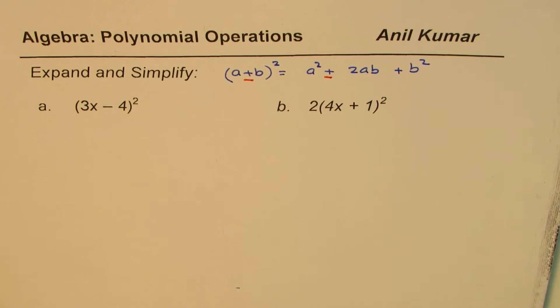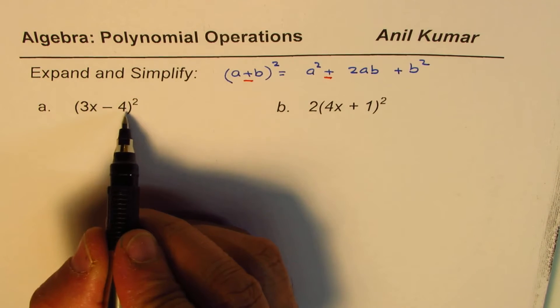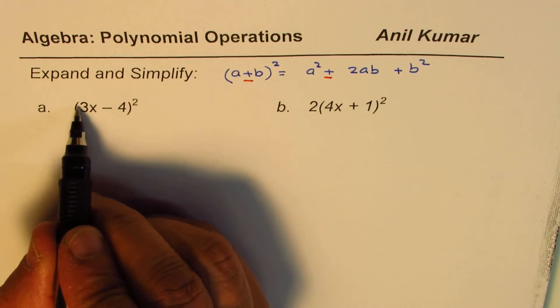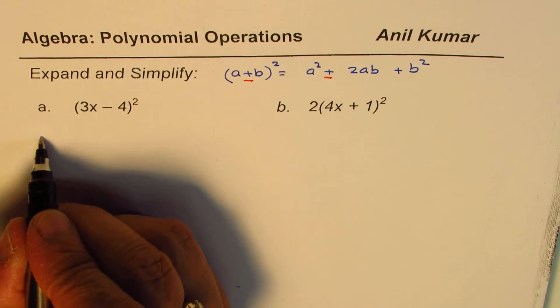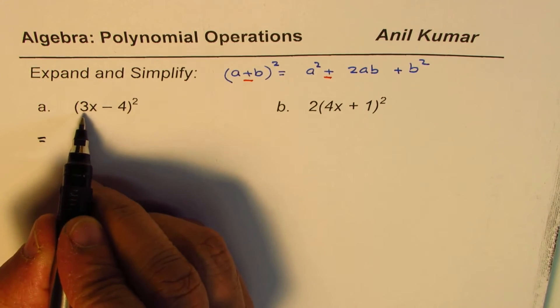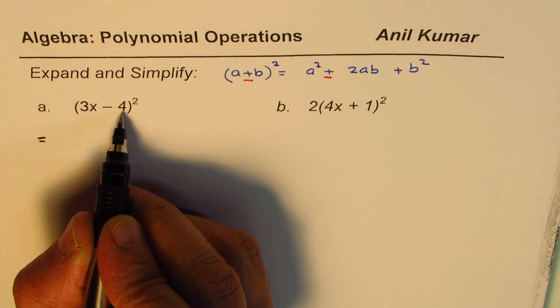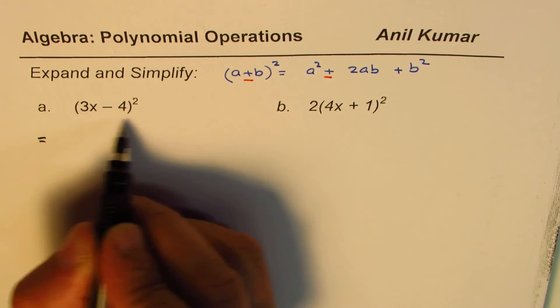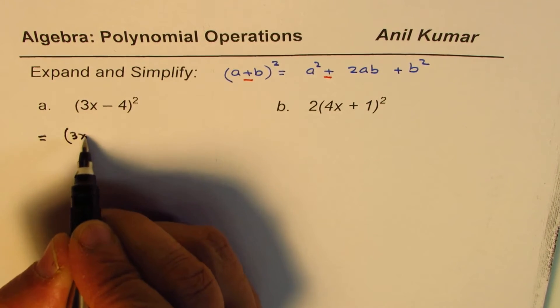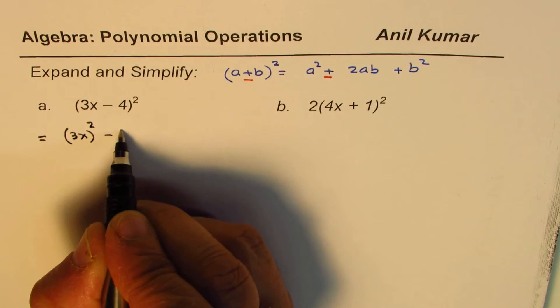Okay, so the question here is to expand and then simplify (3x-4)². a is 3x, b is 4. We have minus here, so when you expand it we get (3x)² - 2 times 3x times 4.